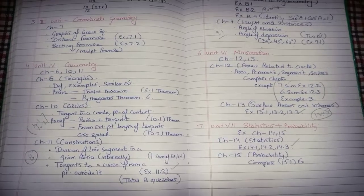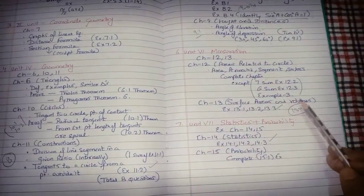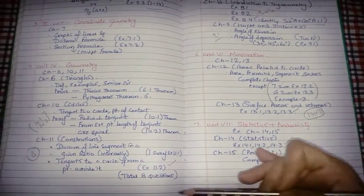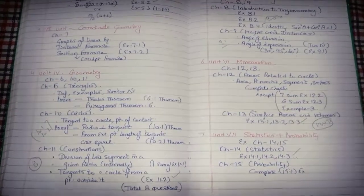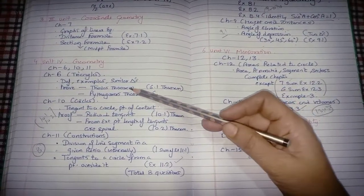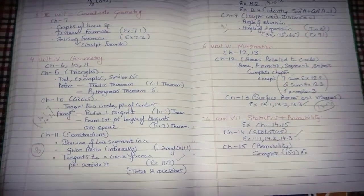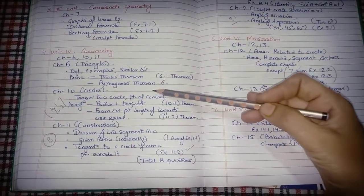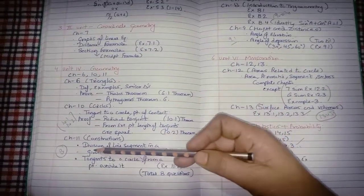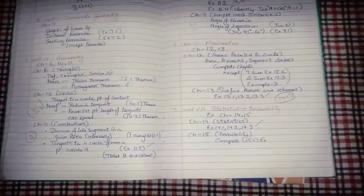So students, you have seen that the syllabus cuts are internal - no full chapter has been removed. For example, 7.3 is skipped, 13.4 is skipped, 14.4 is skipped. I have briefly discussed what you need and what you don't. Note that there are 2 theorems from Chapter 6 and 2 theorems from Chapter 10; 100% one theorem comes in the board paper for 4 marks. If you prepare all 4 theorem proofs, that question will be easily solved. Similarly, from Chapter 11 you have 8 questions total, and one will come in the exam.